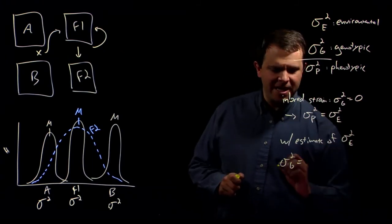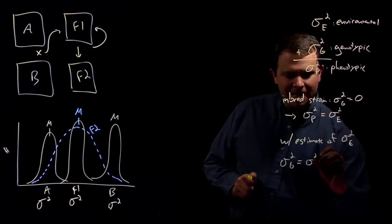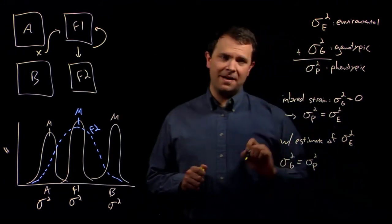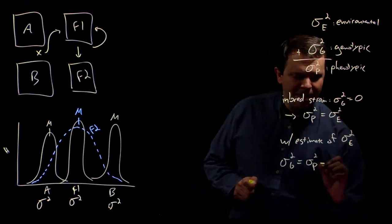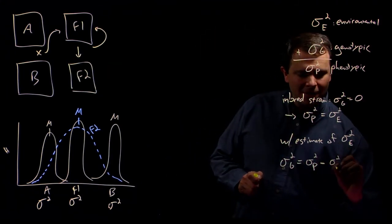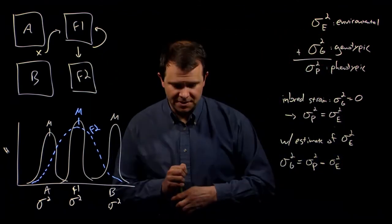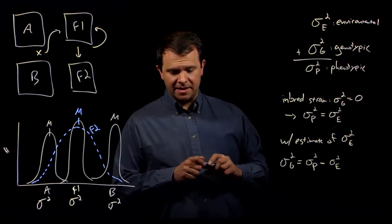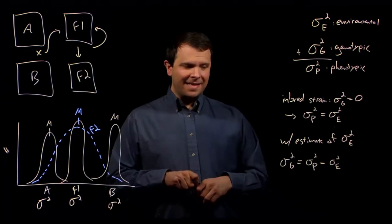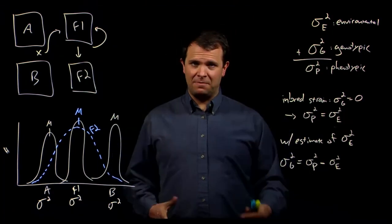Then σ²G is simply the total amount of phenotypic variance that we measure minus our estimate of the amount of variance due to the environment.